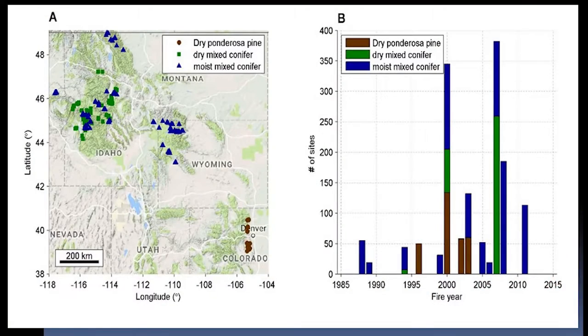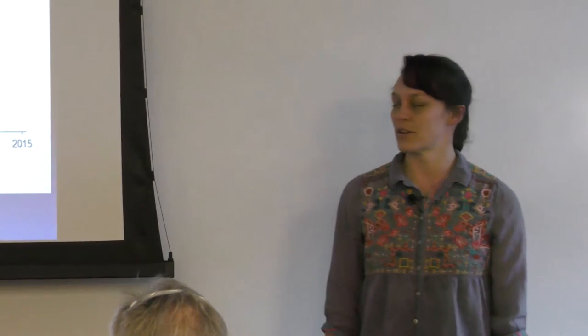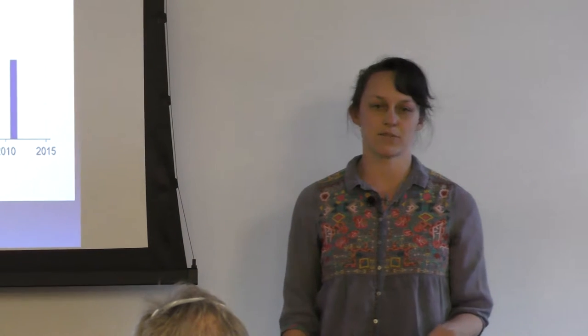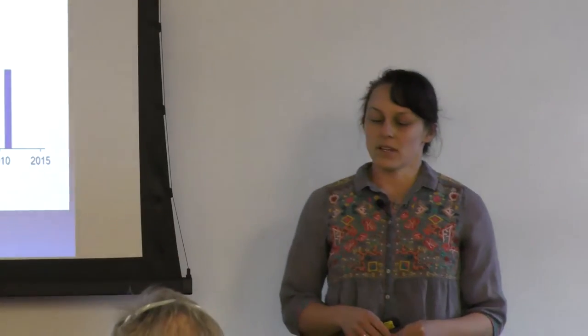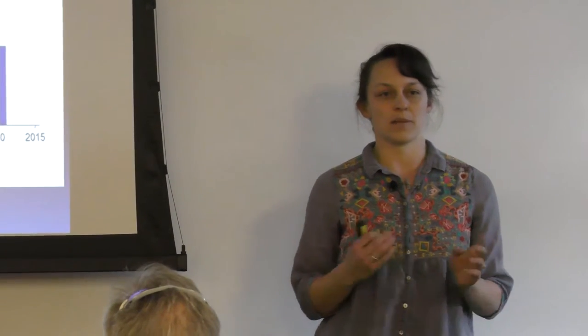We conducted this study across a pretty wide range, from here in Colorado all the way up to Glacier National Park along the Canada-Montana border. It includes several different forest types: pretty dry forest types like dry ponderosa pine and dry mixed conifer throughout Idaho and Wyoming, and also some wet and moist forested ecosystems including subalpine fir, spruce-fir forest, and larch in some cases.